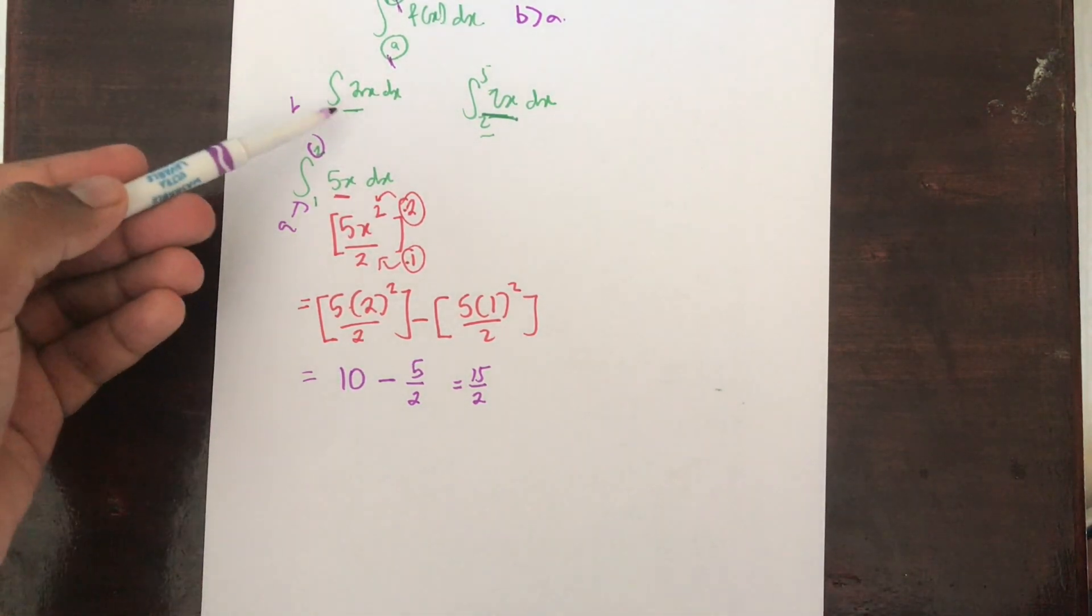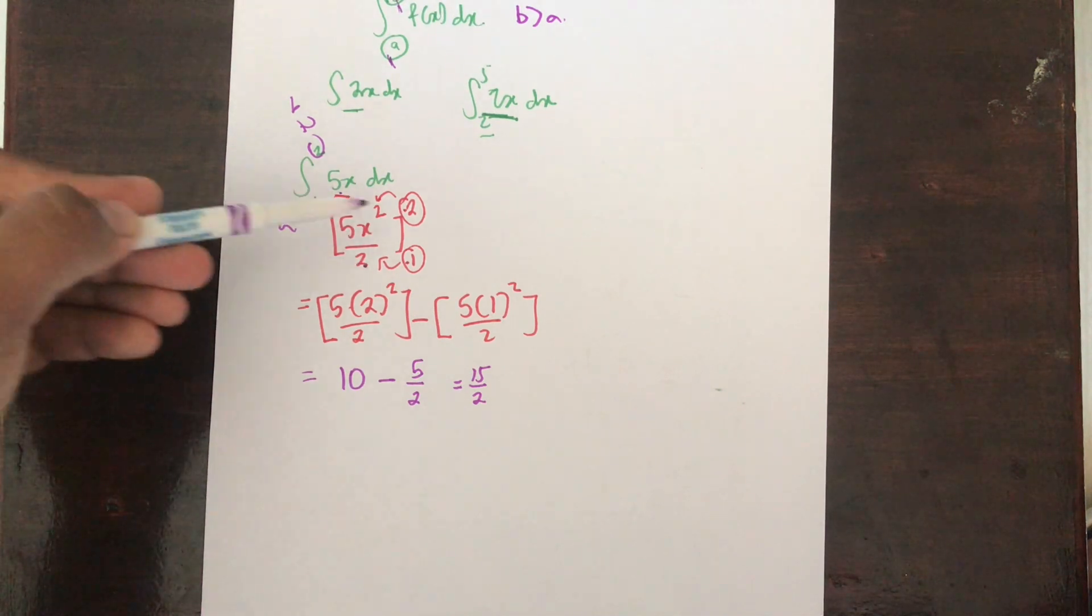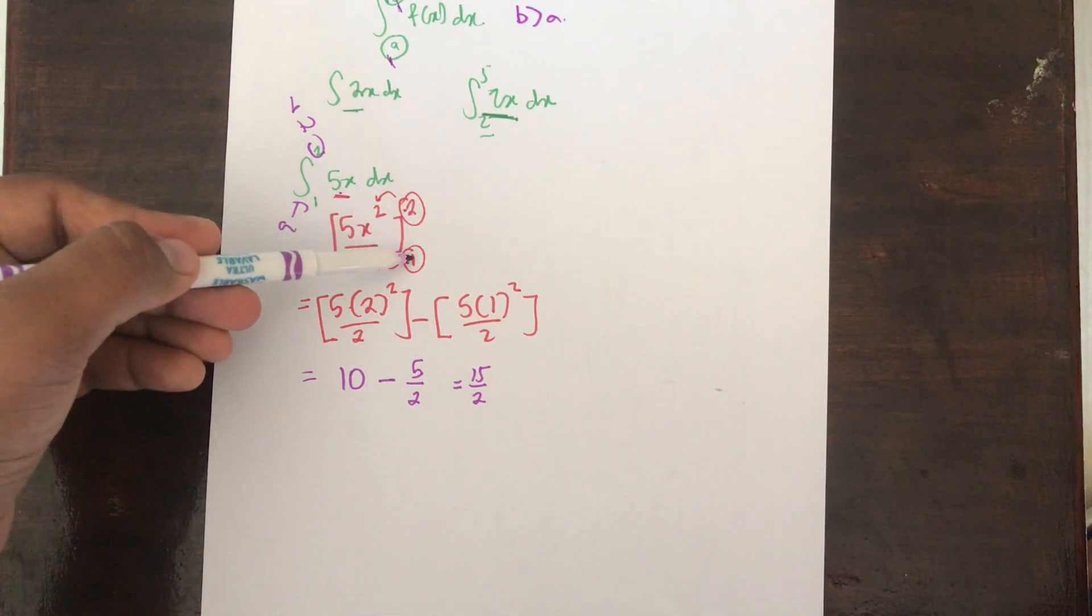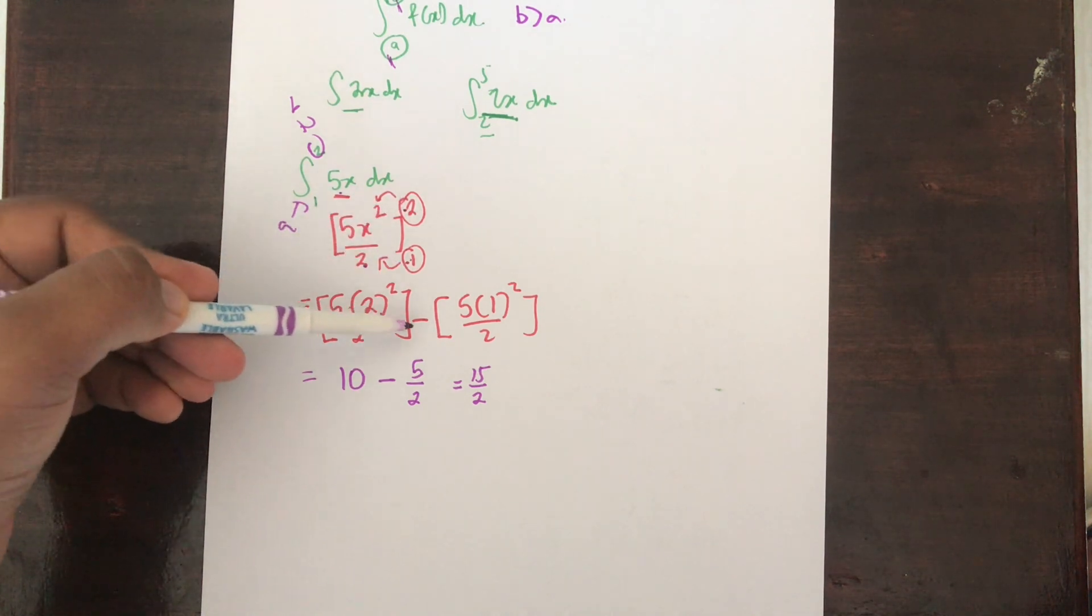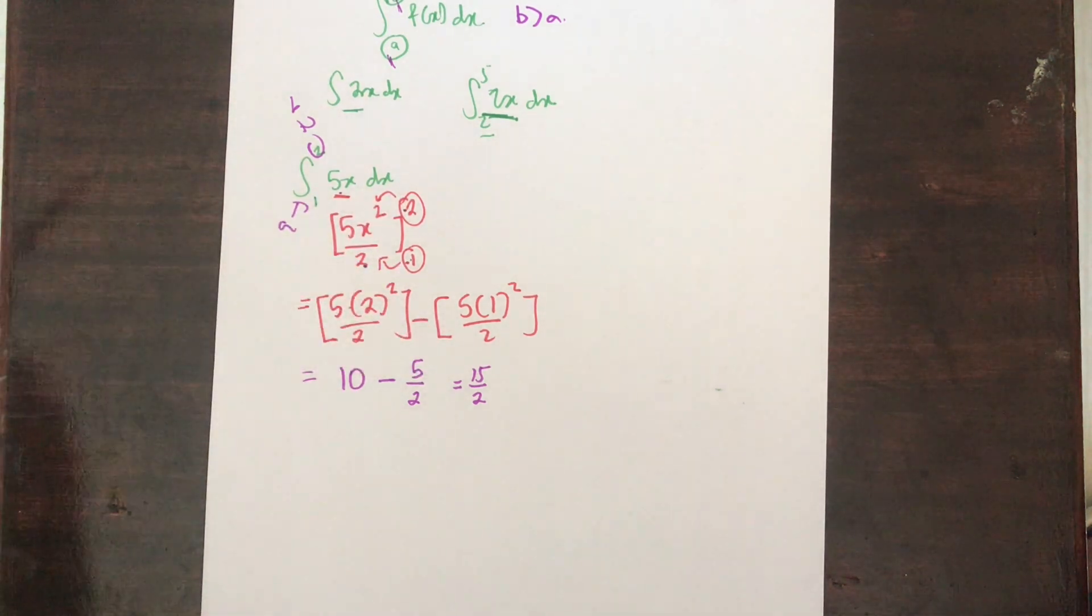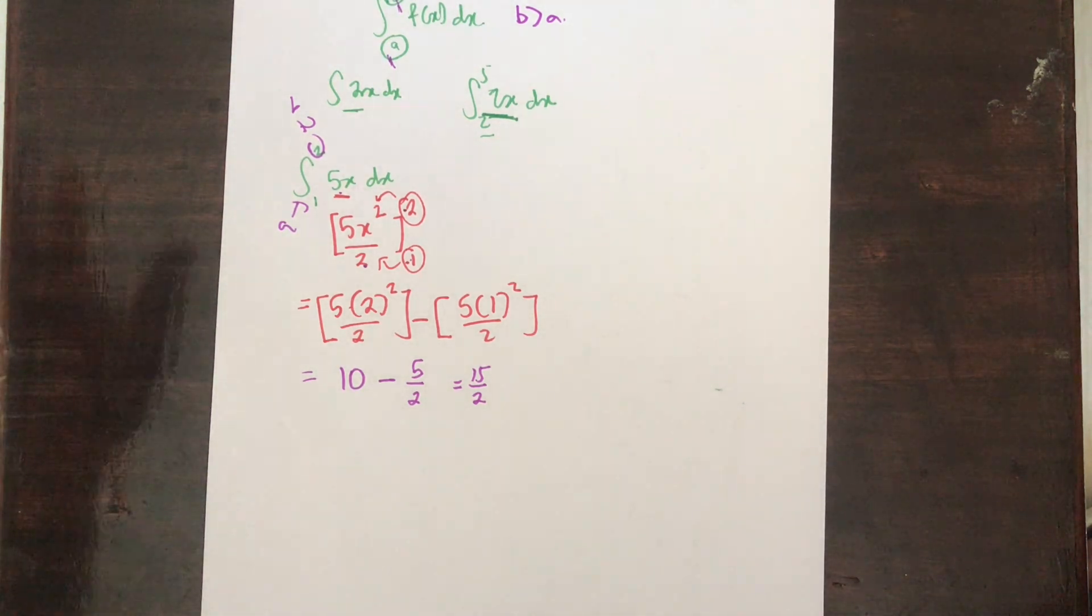Once you're able to notice that it's a definite integral, all you need to do is integrate the normal way on how we learned it and substitute the limits which we are given. You need to make sure that the top one goes first minus the bottom one and you get your answer. You can use this for any type of definite integration involving trigonometric functions, exponential functions, or just normal questions.